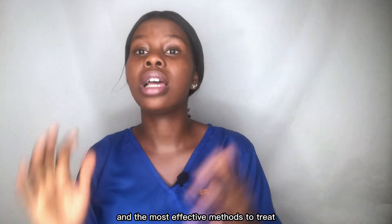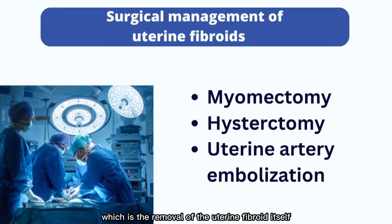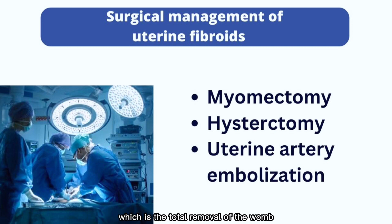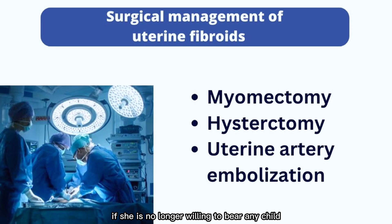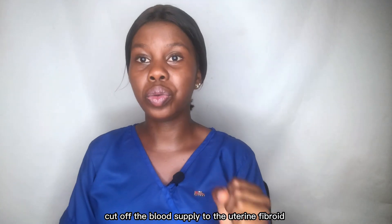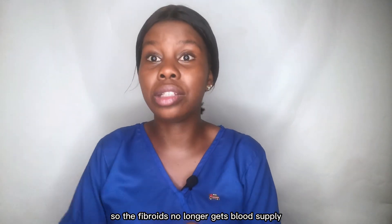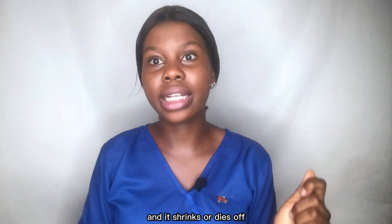The most effective treatment method is surgery. The first surgical option is myomectomy — the removal of the fibroid itself. The second is hysterectomy, which is the total removal of the womb; this is advisable for women who have completed childbearing. Another option is uterine artery embolization, where agents are inserted into the arteries to cut off the blood supply to the fibroids, causing them to shrink or die off.